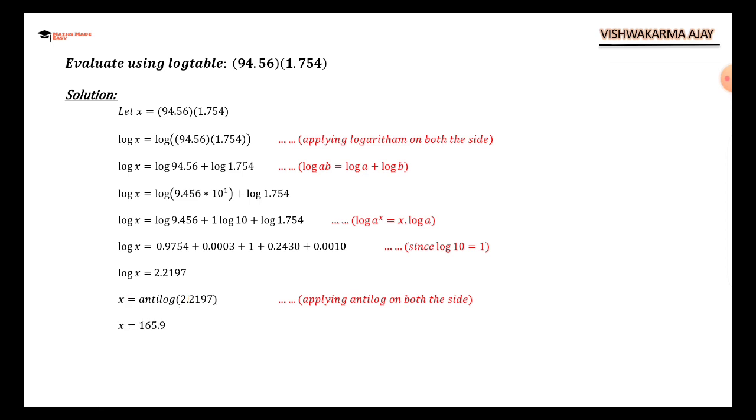0.21 row number, column 9, and mean difference 7, so I have 1659. But our characteristic was 2, and if you remember in the antilog lecture, characteristic plus 1 is 3, so my decimal point will be after 3 digits: 165.9. So the value of x equals 165.9, which means 94.56 times 1.754 is approximately equal to 165.9. Remember that log and antilog will always give you approximate calculations.